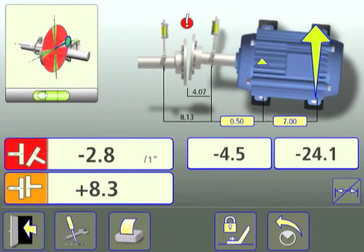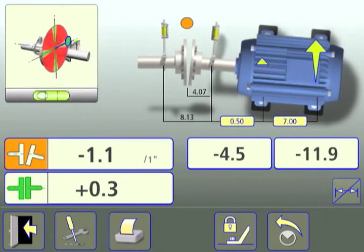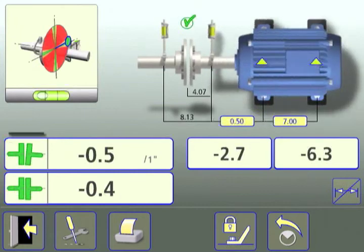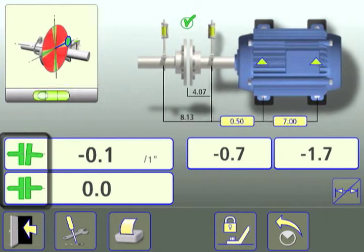Since the screen is live, the values will change as the corrections are made. The angle and offset icons will turn green, and a green check will appear above the coupling when the tolerance levels have been met.